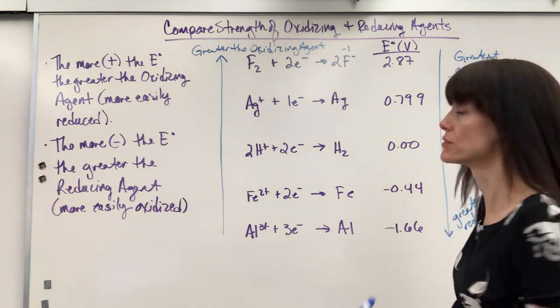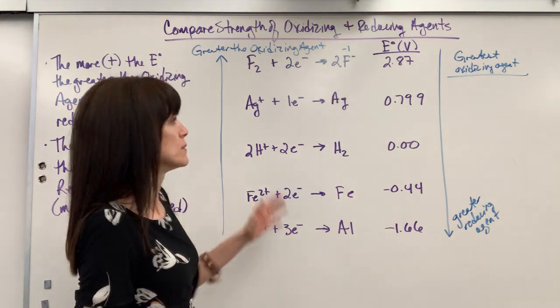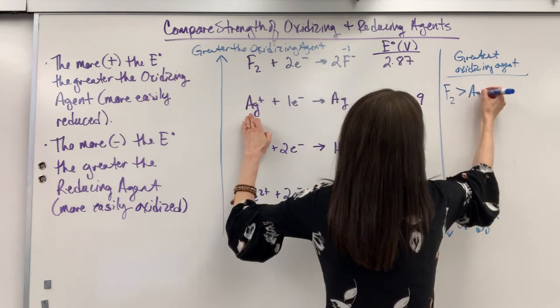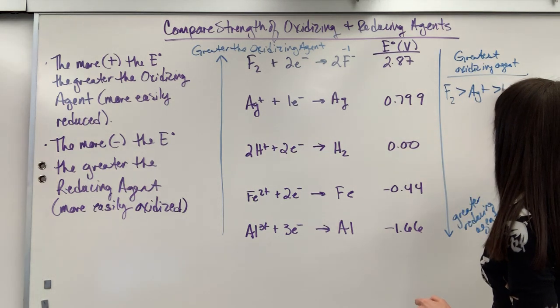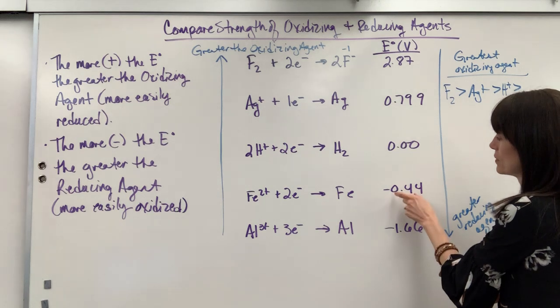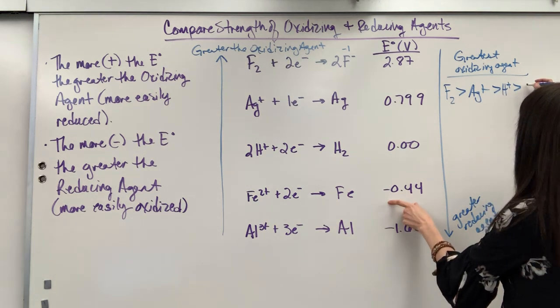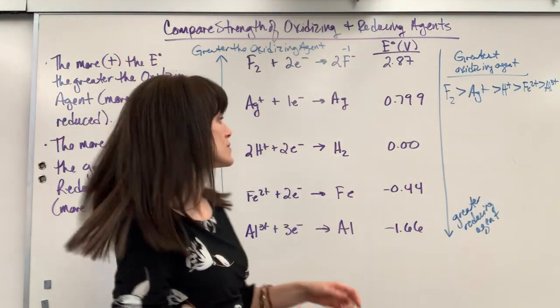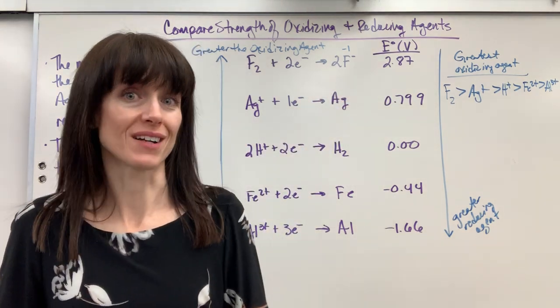So, here's how I would put this in a list. The greatest oxidizing agent is the one with the biggest E value, biggest positive E value. So fluorine would be greater than silver, because 2 is bigger than 0.79, and that's bigger than 0, which would be greater than the hydrogen ion, which is going to be greater than iron 2+, which is greater than aluminum 3+. So, it's simply by saying the most positive number trumps. It's going to be the strongest oxidizing agent.